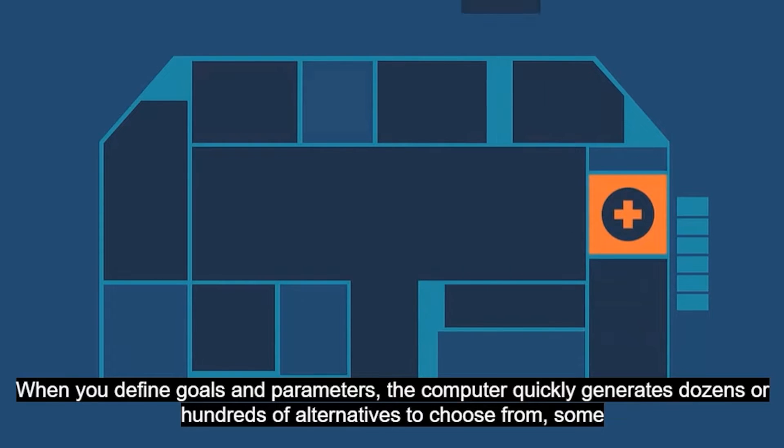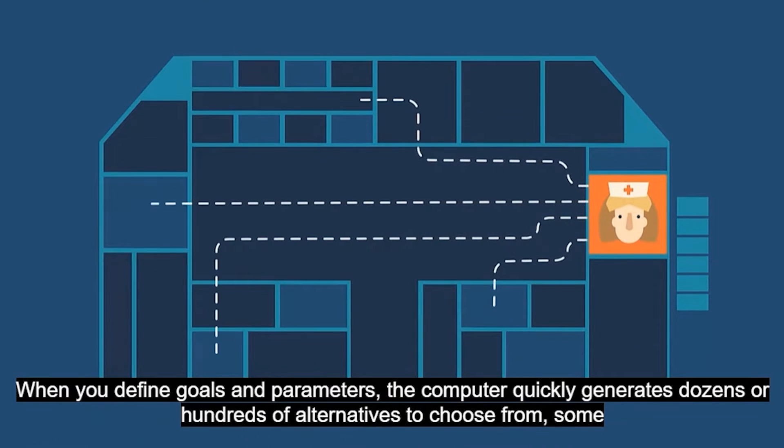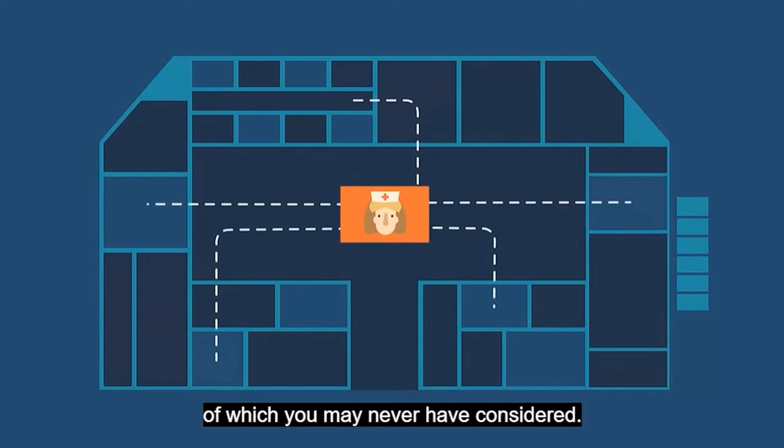When you define goals and parameters, the computer quickly generates dozens or hundreds of alternatives to choose from, some of which you may never have considered.